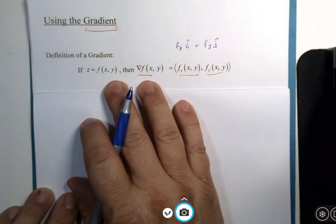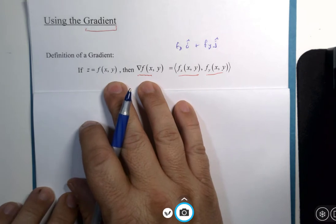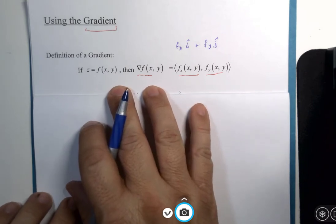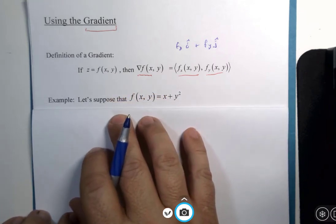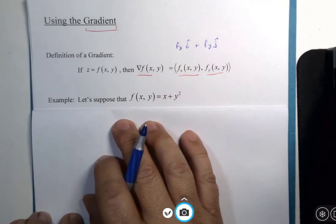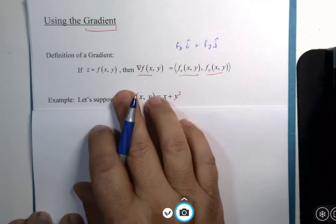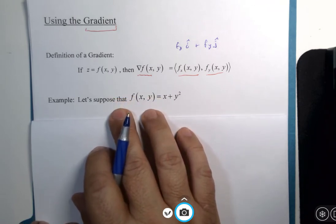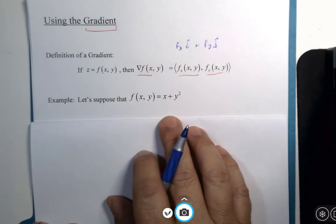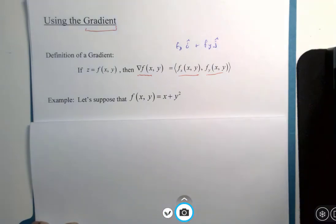So what can we do with only the gradient? We saw that it was used in several other properties. What does it do by itself? So let's suppose we have a function of x, y and we are going to calculate its gradient.